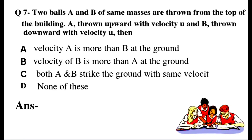Question number 7: two balls A and B of the same mass are thrown from the top of a building. A is thrown upward with velocity U and B is thrown downward with velocity U. Option A: velocity of A is more than B at the ground. Option B: velocity of B is more than A at the ground. Option C: both A and B strike the ground with the same velocity. Option D: none of these.